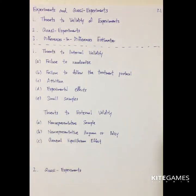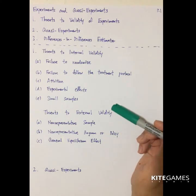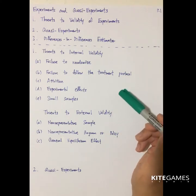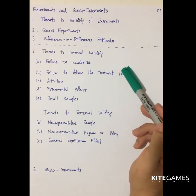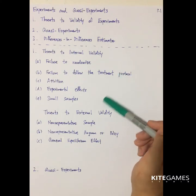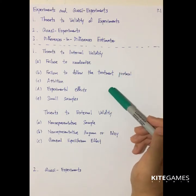So first, what is the threat to internal validity? After you conduct some experiment, whether it can explain human behavior, or whether your sample can represent the whole population, depends on these factors. Under what condition is your sample failed to explain the population?